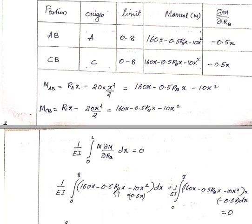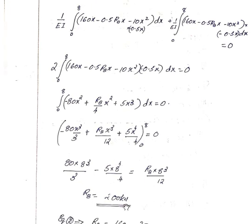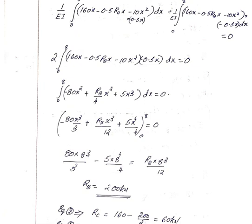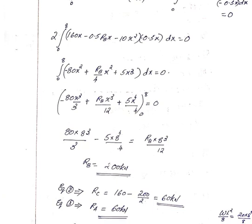Substituting the M and ∂M/∂RB values for both span AB and span BC into the strain energy equation, applying the limits, multiplying terms, and integrating, we solve for RB. Then substituting RB into equation two gives RC, and substituting into equation one gives RA. The results are: RA = 60 kN, RC = 60 kN, and RB = 200 kN.